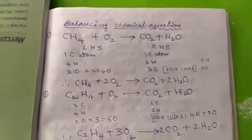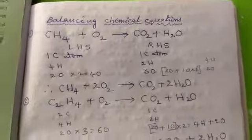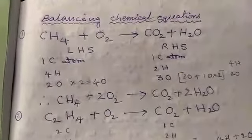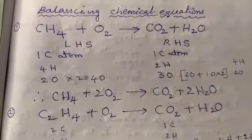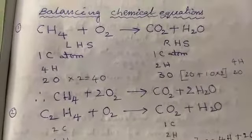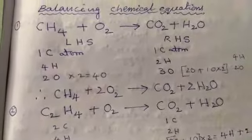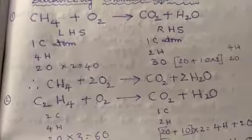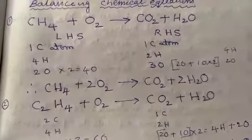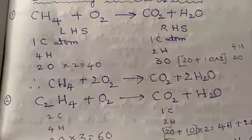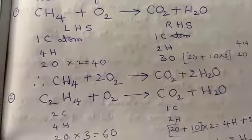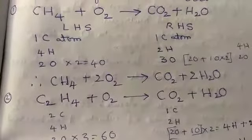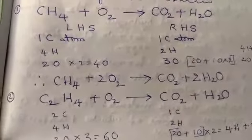See here, CH4 plus O2 gives CO2 plus H2O. On the left-hand side, one carbon atom. On the right-hand side, also one carbon atom. On the left-hand side, four hydrogen atoms. On the right-hand side, two hydrogen atoms. On the left-hand side, two oxygen atoms, and on the right-hand side, three oxygen atoms. Now we have to balance the above equation.